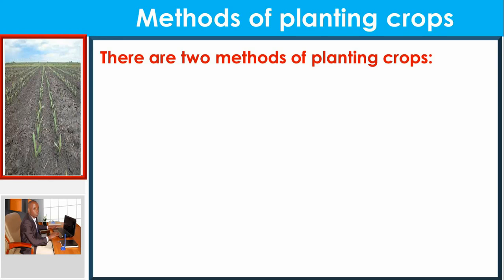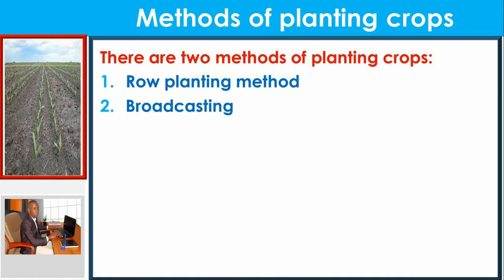We are going to look at these two methods one by one. The first method is row planting. The second method is broadcasting, which can also be called sowing method.